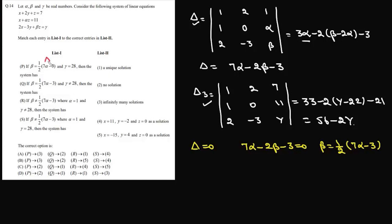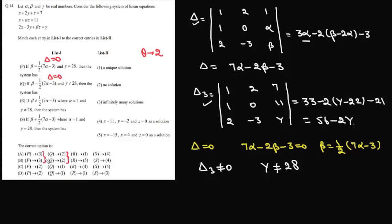Now if we look at delta 3, if delta 3 is not equal to zero, that means gamma is not equal to 28. In that case, the equation will have no solution. So option q matches with 2. For both conditions in option p, it matches with 3, meaning the system will have infinitely many solutions.